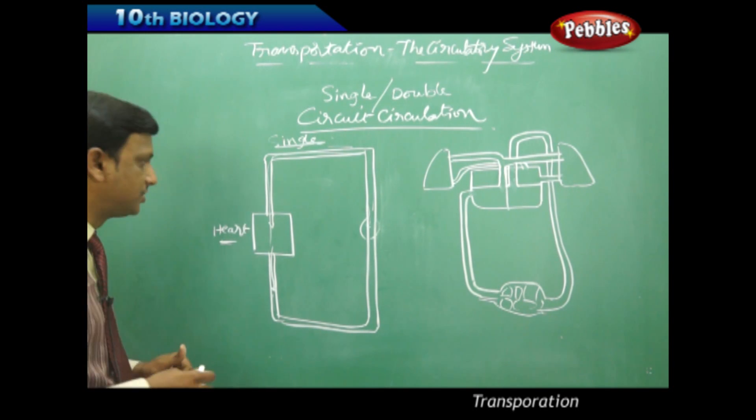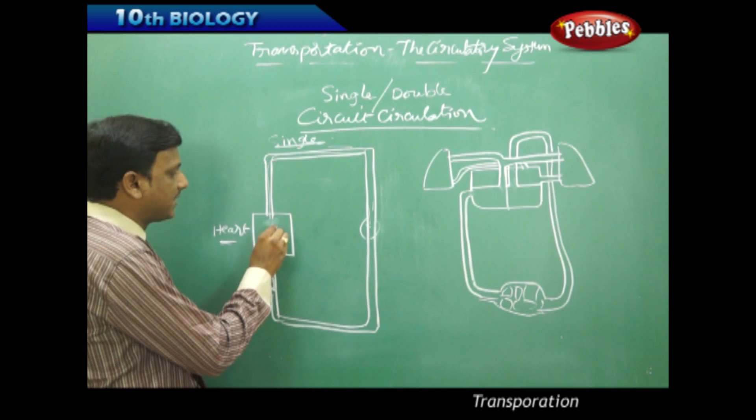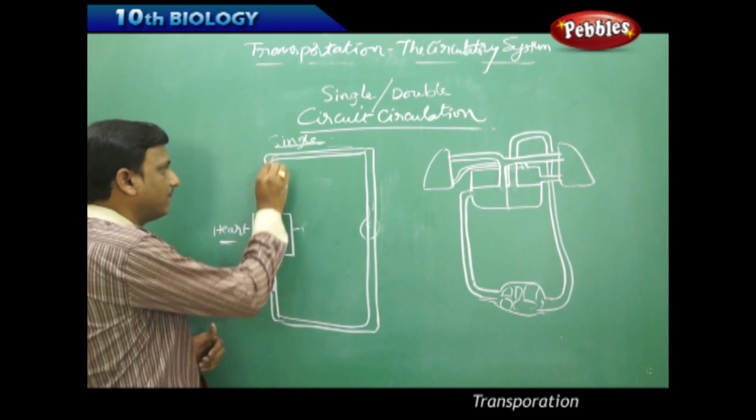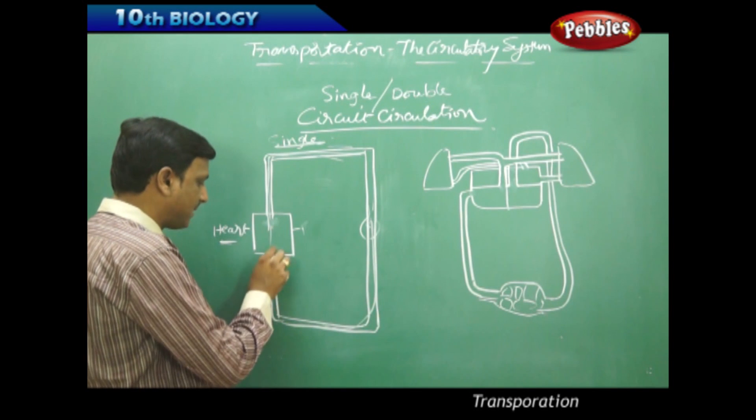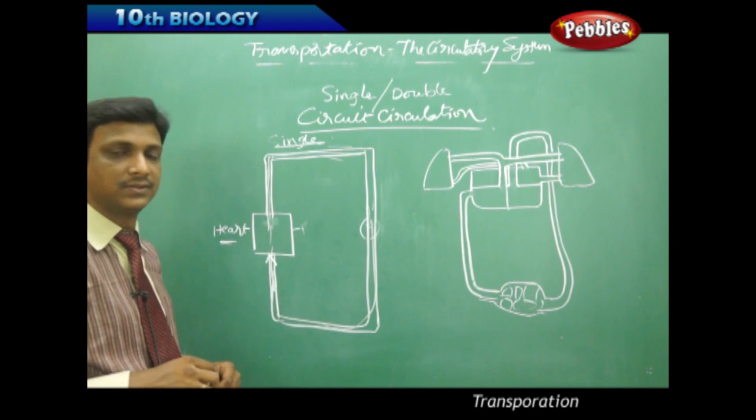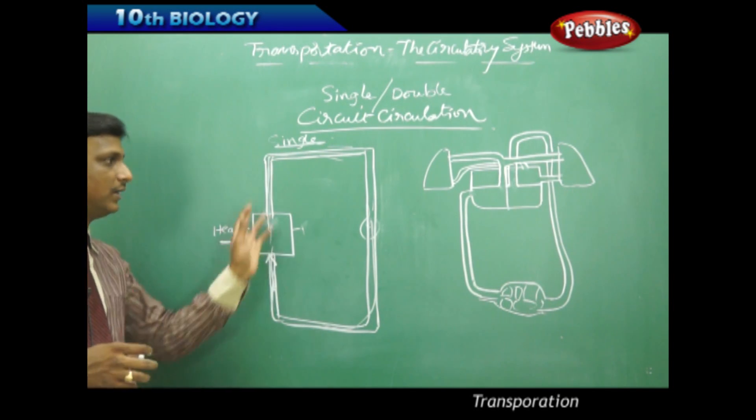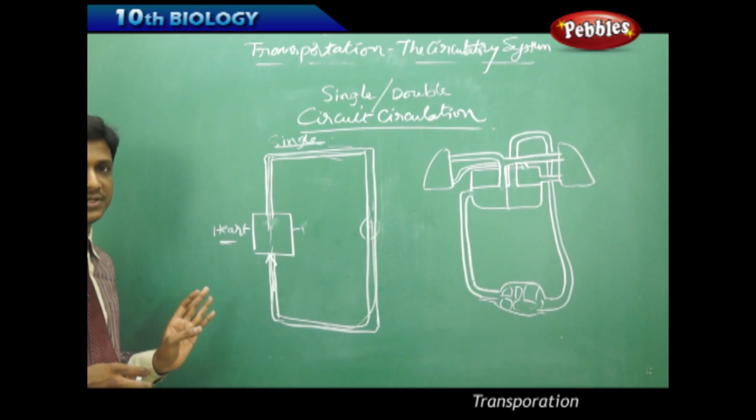If you see the single circuit circulation, the blood is pumped by the heart to body parts. From the body parts, it comes back again to the heart. Only one single circuit circulation is observed in smaller animals like fishes.